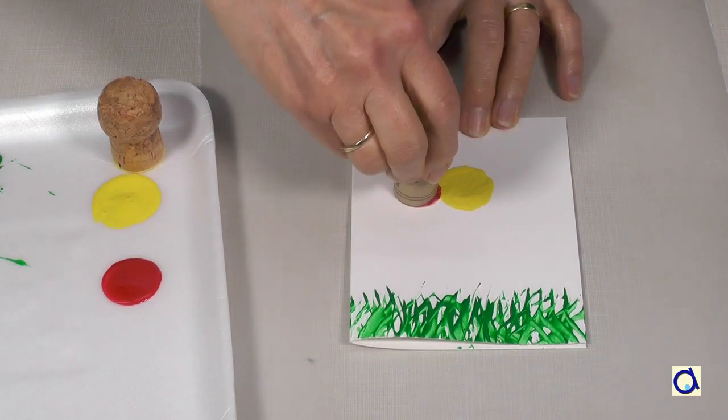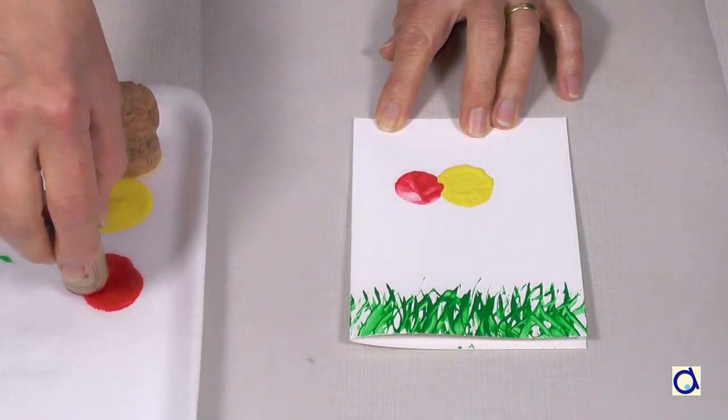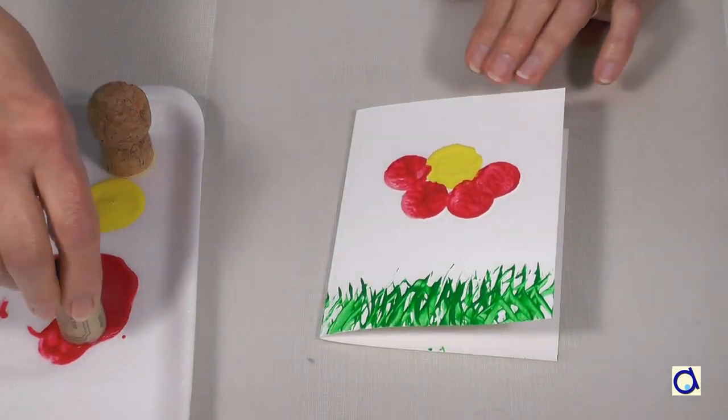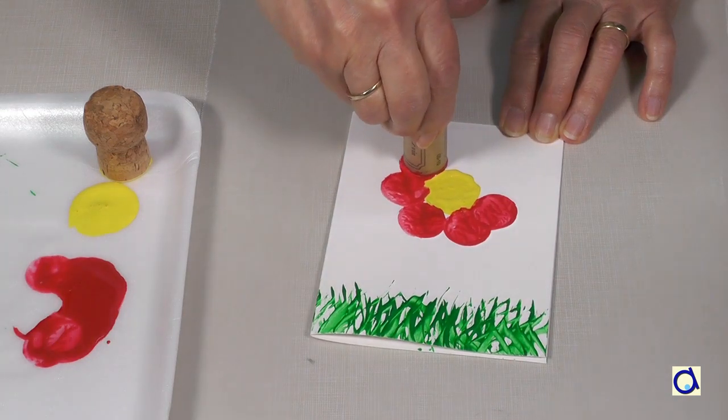Now take a wine cork and dip it in a contrasting colour to create the petals all around the heart of the flower. I use red paint to represent the petals.